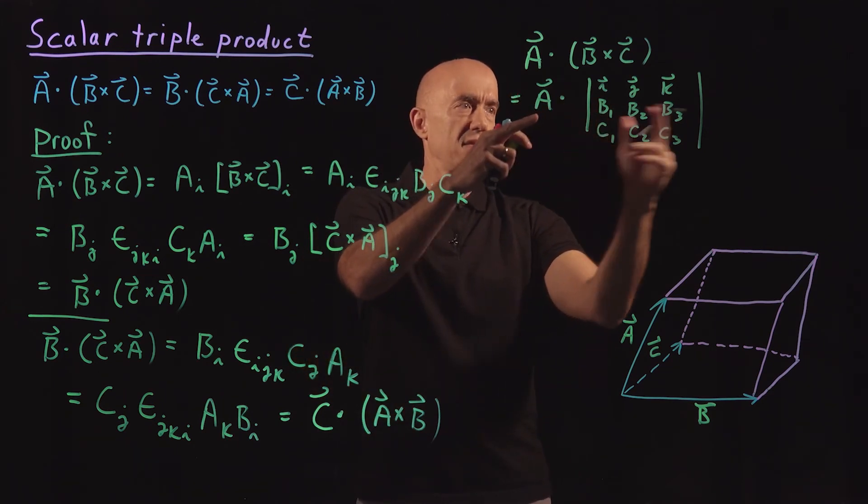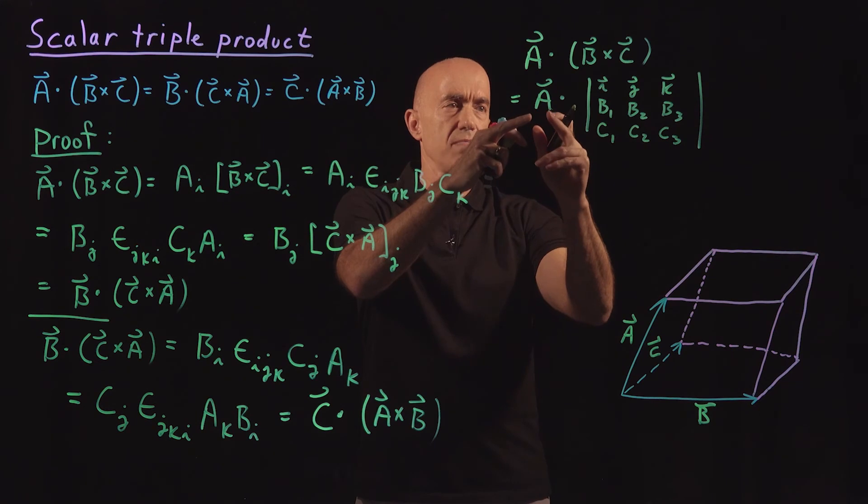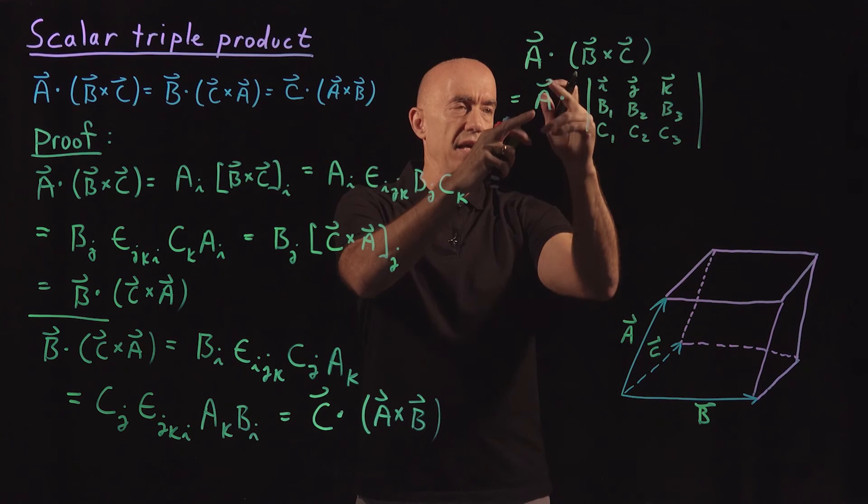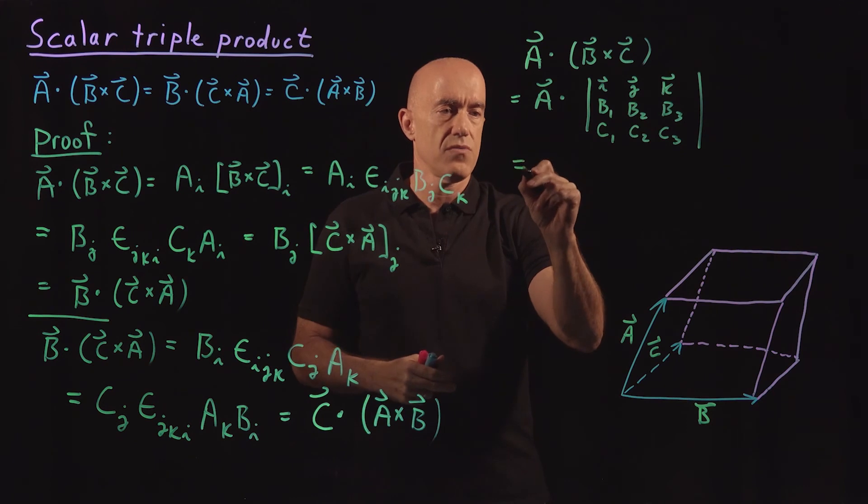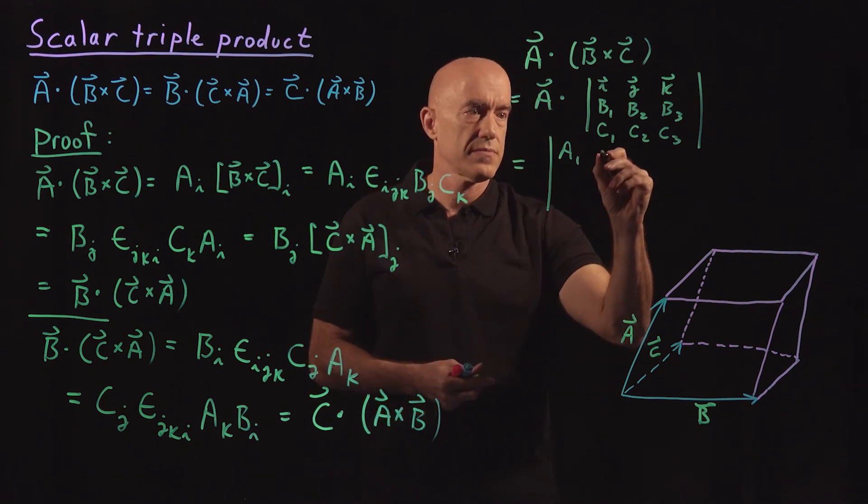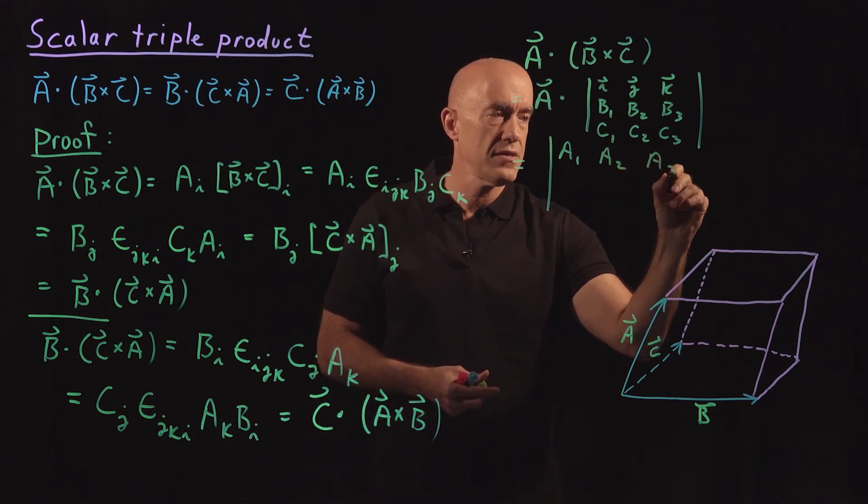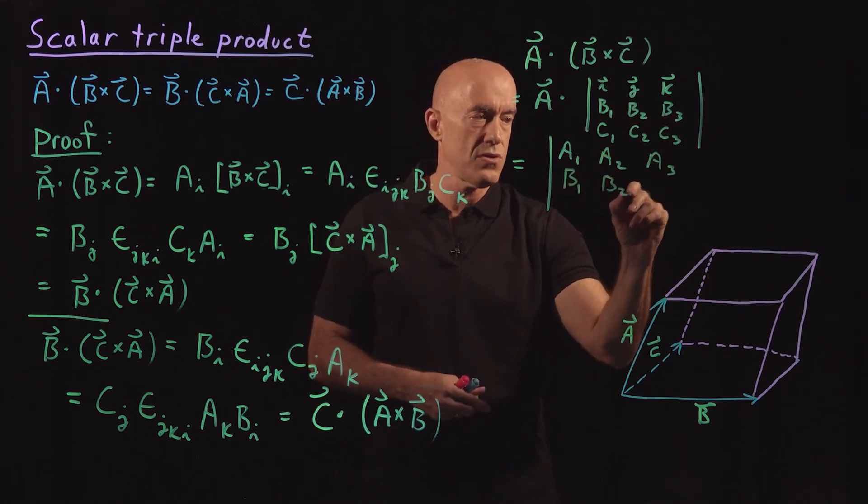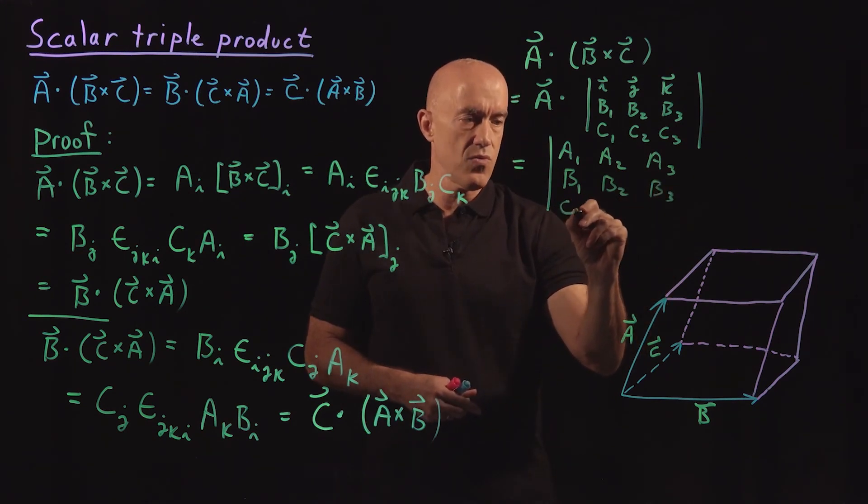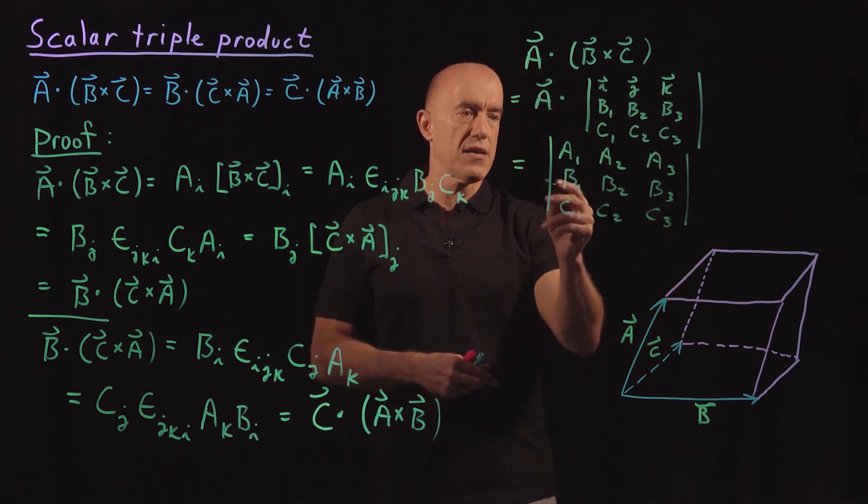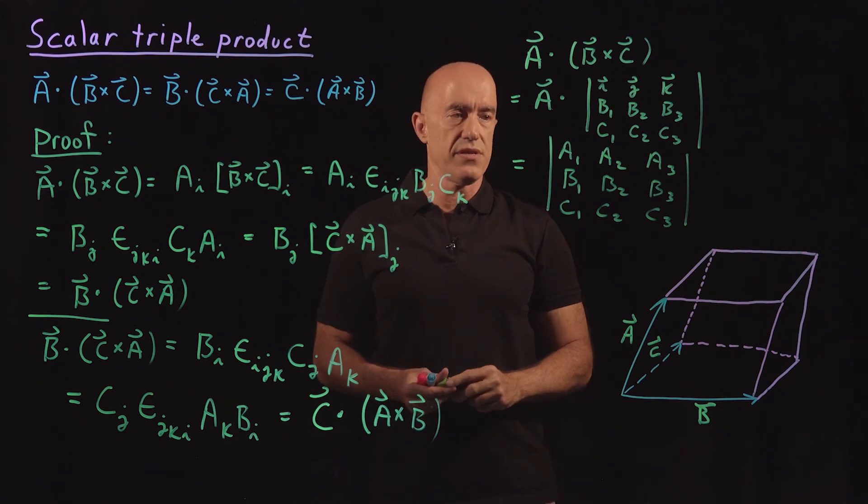So what is this? A dot this determinant, we would have that would be A1 times the Ith component, plus A2 times the Jth component, plus A3 times the Kth component. Which then works out to the 3 by 3 determinant, A1, A2, A3, just dotting A into these I unit vectors. B1, B2, B3, and C1, C2, C3. So the scalar triple product is actually just this 3 by 3 determinant.